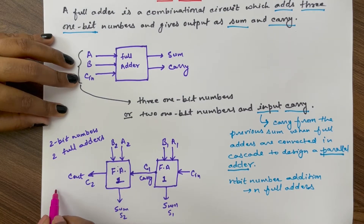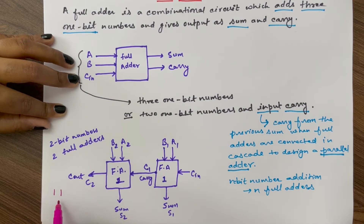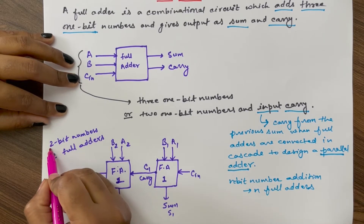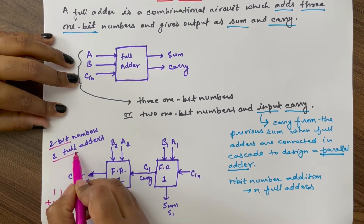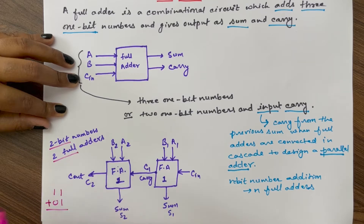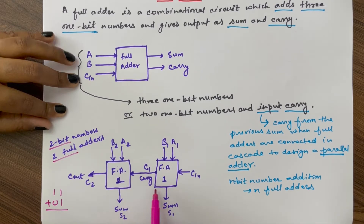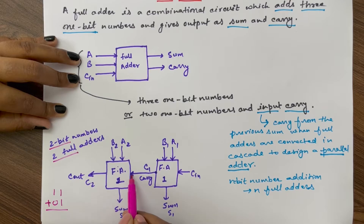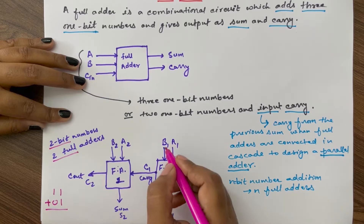Suppose we have to add two two-bit numbers: the first two-bit number is 1 1 and the second is 0 1. For this addition we need two full adders. For n-bit number addition we need n full adders, and these two full adders will be connected in cascade such that the carry output from the first full adder will act as C-in of the second full adder.